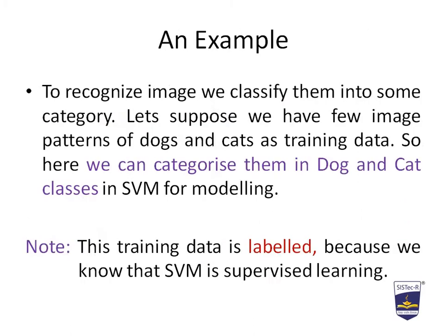Let's take an example to understand the overall mechanism. To recognize an image, we classify it into some category. Let's suppose we have a few images or image patterns of dogs and cats as training data. Here we can categorize them into dog and cat classes in SVM for modeling. This training data is labeled, because SVM is supervised learning.